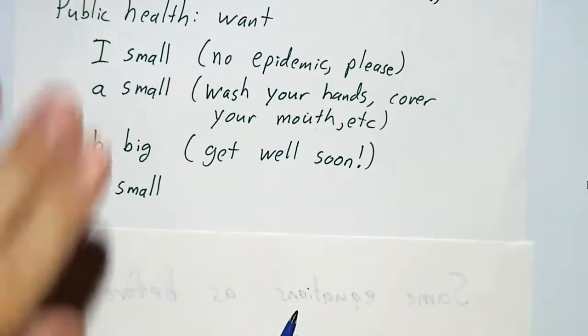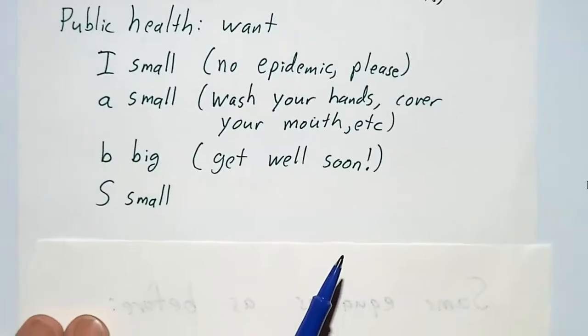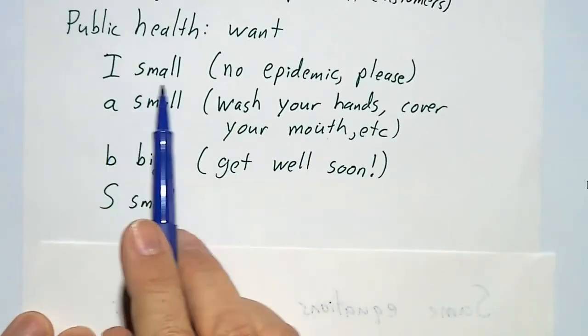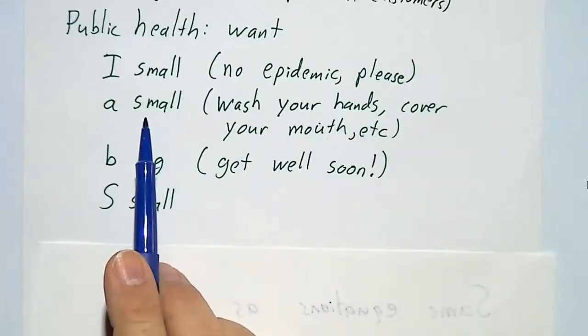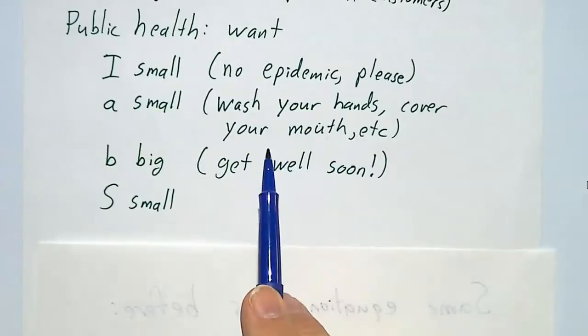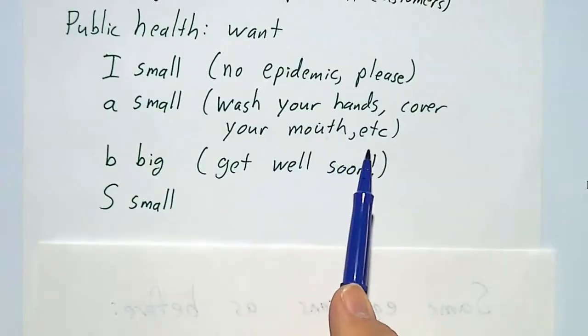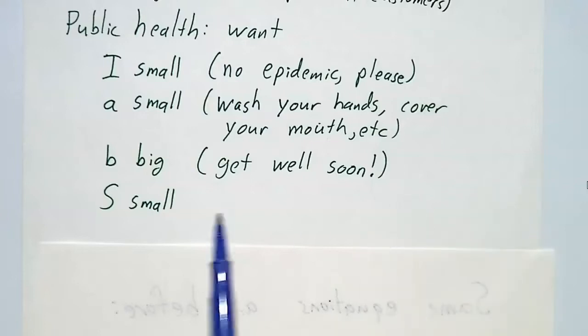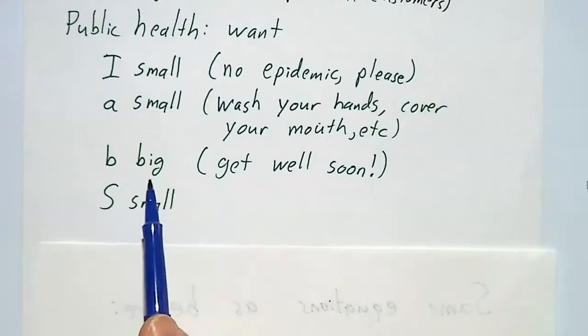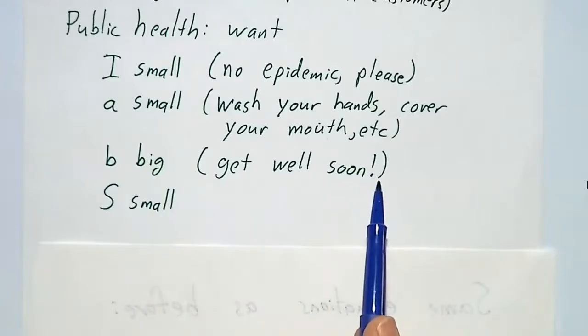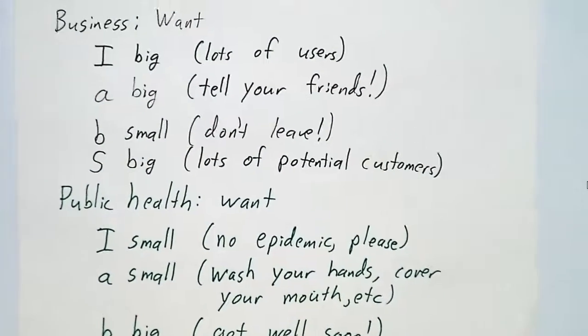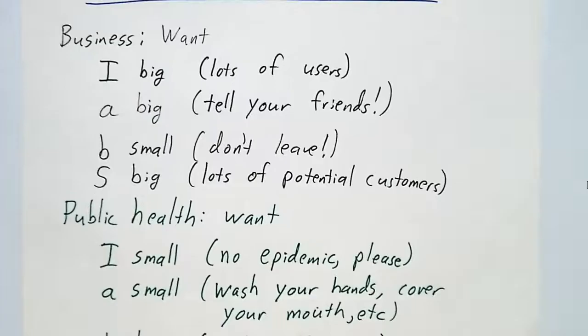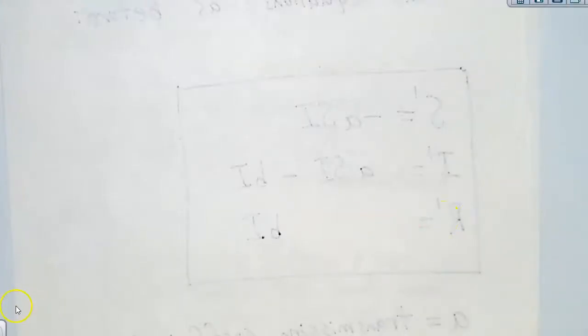If you're doing this for public health, it's the same model, only now you want I small. I is the number of infected people. You don't want an epidemic. And that means you want A small. You want to have as little transmission as possible. So you'd tell people to wash their hands, cover their mouths when they sneeze, use hand sanitizer, stay home when they're sick, whatever. And B, you'd like that to be big so that people get well soon. And you'd like the pool of potentially sick people to be as small as possible. So same equations, but different goals and different policy implications.